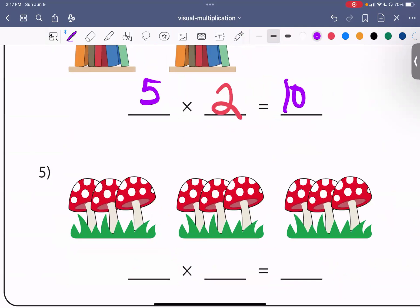Next, we have mushrooms. Next, we have one, two, three groups of mushrooms. And then, in each group, we have one, two, three mushrooms. So three times three is nine. Or three plus three plus three is nine.